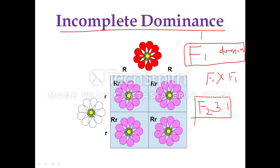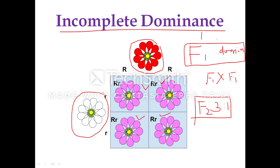In the case of the four o'clock plant, Mirabilis jalapa, when red flower bearing plants were crossed with white flower bearing plants, all the F1 plants were bearing pink flowers. They were not matching the dominant parental character of red color. According to Mendel's law, F1 should resemble the dominant parent and show red flowers, but here F1 plants are showing pink flowers. This is a deviation from Mendel's law of dominance, and it is called incomplete dominance.